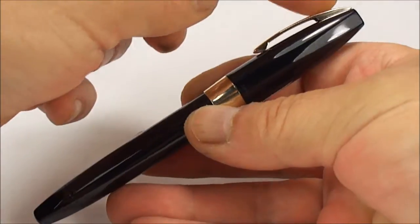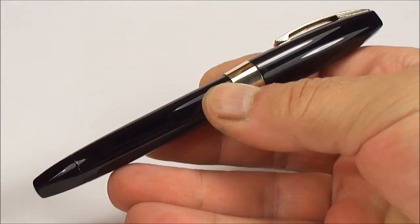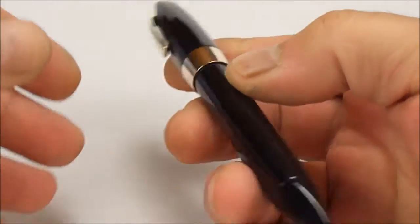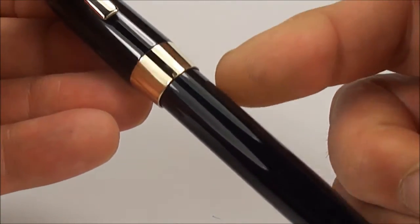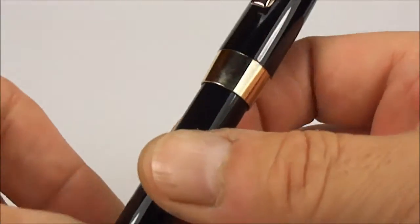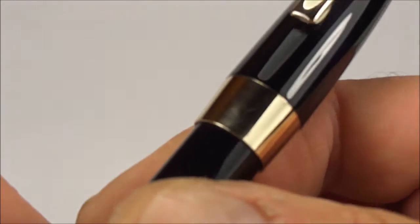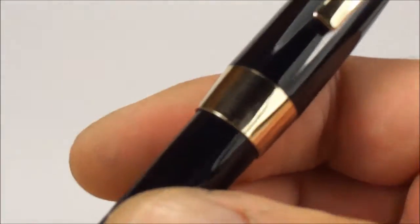The size of the pen from the top of the cap to the bottom of the barrel is approximately 135mm capped. Around the diameter of the barrel here, it's a tad over 12mm in diameter. This particular pen, as you'll see by the nib as well, is actually made in Australia.